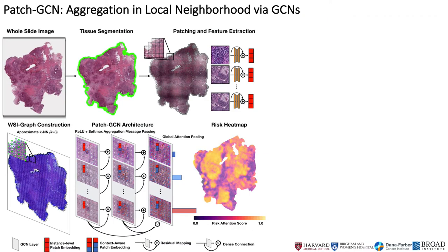To address this issue, we propose a spatially resolved patch-based GCN for survival outcome prediction in histopathology slides. One of the key contributions of our work is that we formulate whole slides similar to point clouds, in which nodes correspond to histology image patches, and edges are connected between adjacent patches using k-nearest neighbors. After constructing our graph-based data structure, we use message passing in GCNs to learn context-aware features that are prognostic for survival in whole slide images.